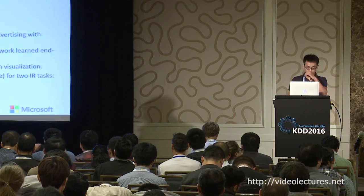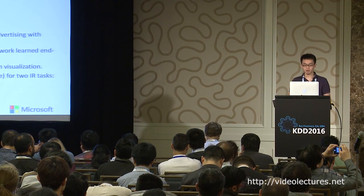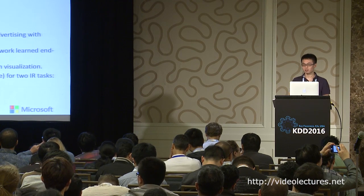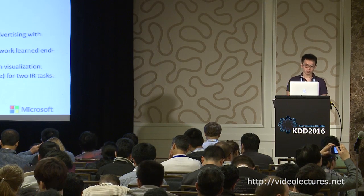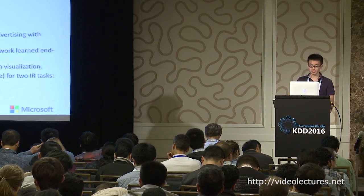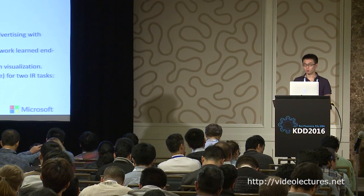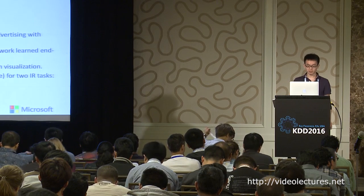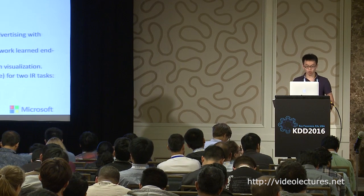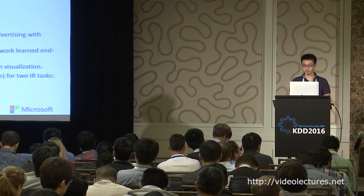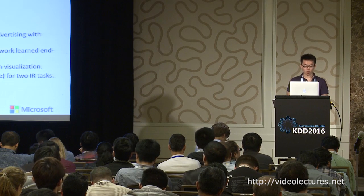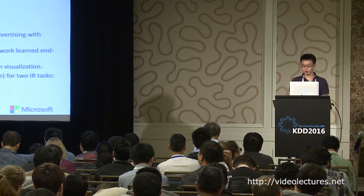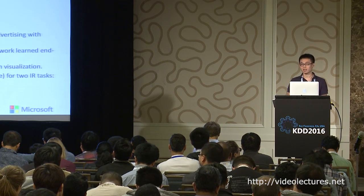To conclude, we have presented Deep Intent, which learns representations for queries and ads in online advertising with RNNs. We explicitly perform term weighting with an attention network, which is learned end-to-end. Deep Intent enables diagnosing and understanding RNNs with attention visualization. We can also utilize attention scores for two information retrieval tasks: query rewriting and modified BM25.